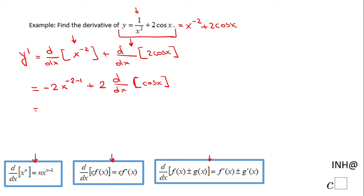And then we have here negative 2 x to the negative 3 power, right? Negative 2 minus 1 is negative 3. Plus 2 times the derivative of cosine is negative sine.